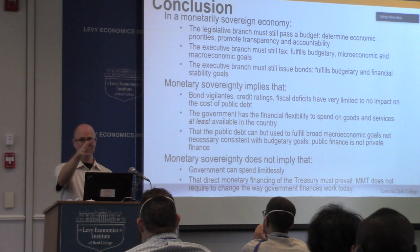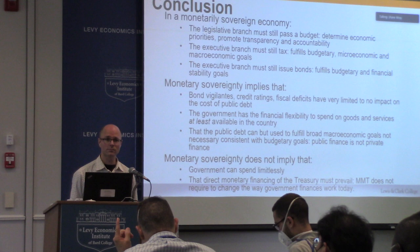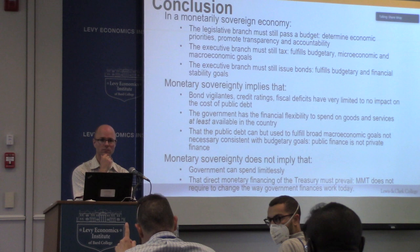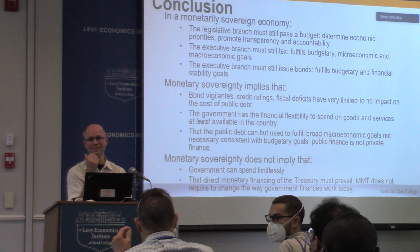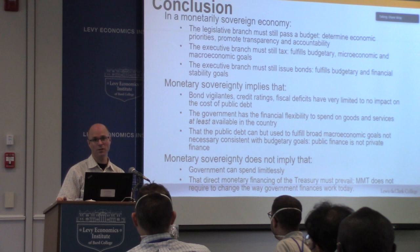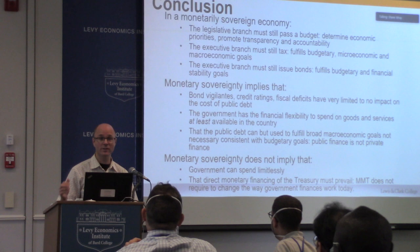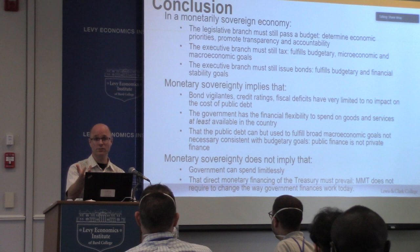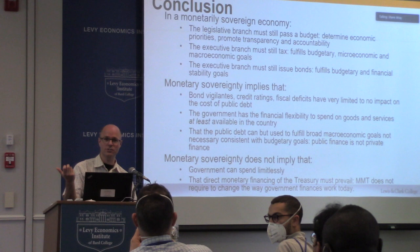Q&A: A questioner asks about how the Fed provides reserves so bond buyers can buy bonds. The speaker clarifies: primary dealers sell or provide as collateral the Treasuries they already have on their books, and so can buy the new Treasuries — it's essentially a swap. The questioner notes that central banks have also bought non-government assets like corporate bonds, creating reserves without direct government spending. The speaker clarifies that the injection doesn't have to come from buying goods and services — it can also come from providing credit, which is a separate channel of reserve injection.